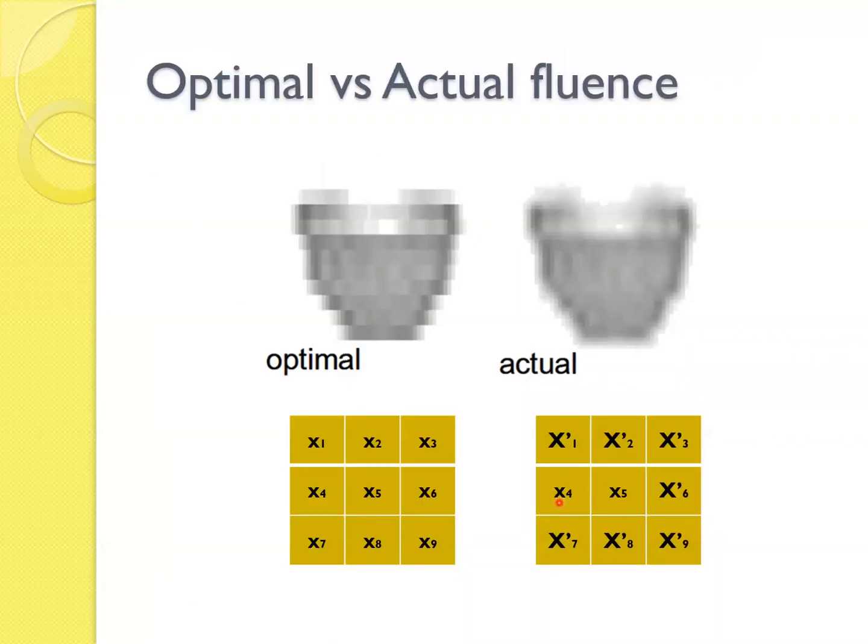So optimal versus actual. So you have an optimizer. So for PO or old version have a different name. So planning optimizer gives you an optimal result. But then it was calculated with MLCs, the actual is made different from the optimal.